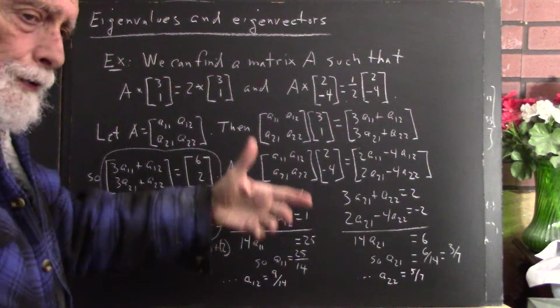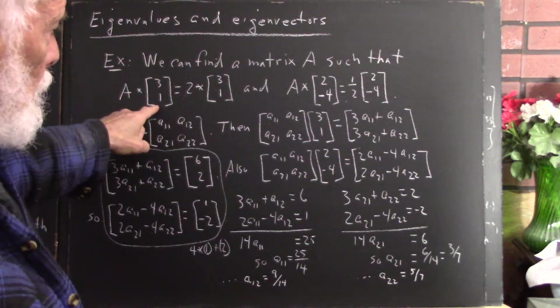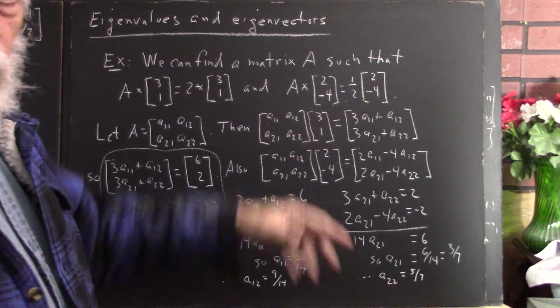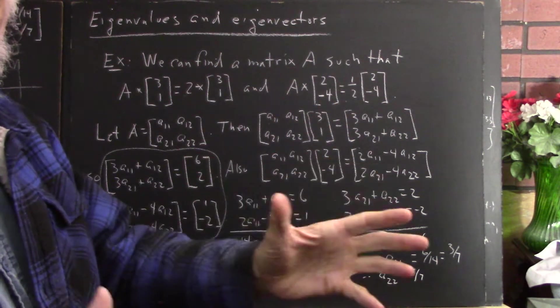We've just picked two vectors: 3, 1 and 2, negative 4. Just picked those out of a hat. Two vectors in R2.